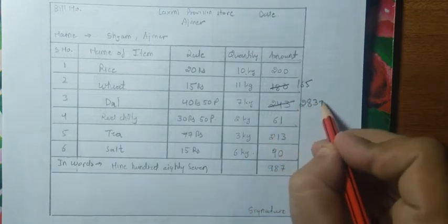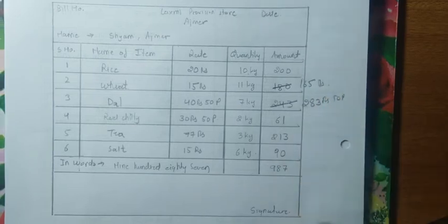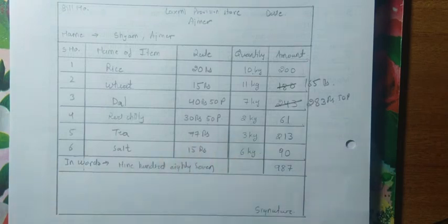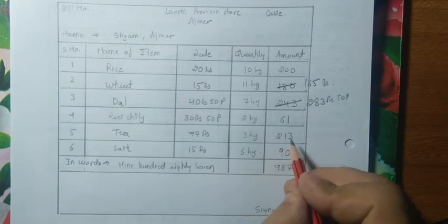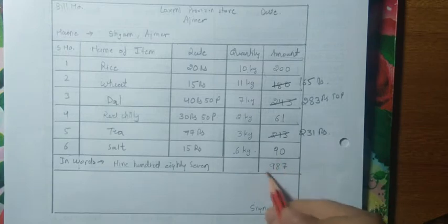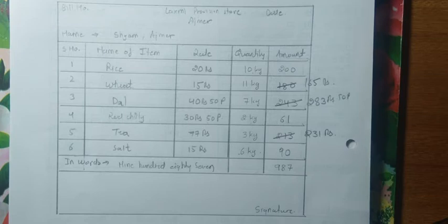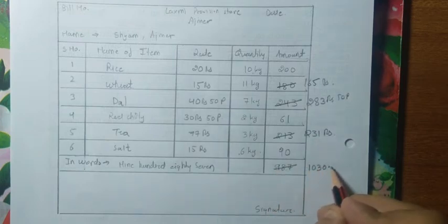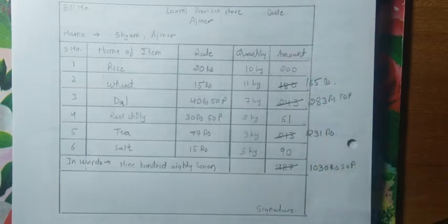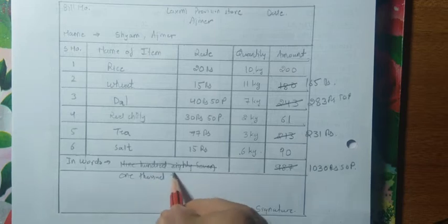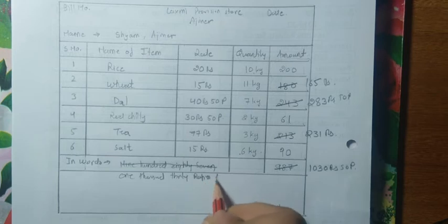40 rupees 50 paise × 7 kg comes to 283 rupees 50 paise, but 243 is written — that is wrong; it should be 283 rupees 50 paise. 30 rupees 50 paise × 2 kg = 61 rupees — that's okay. 77 × 3 kg = 231 rupees, but 213 is written — that is wrong; write 231 rupees. 15 × 6 = 90 — that's okay. When we total all of these: 200 + 165 + 283.50 + 61 + 231 + 90, the corrected total comes to 1030 rupees 50 paise instead of the incorrect 987.